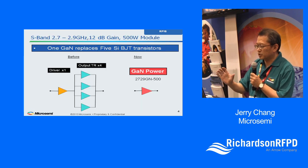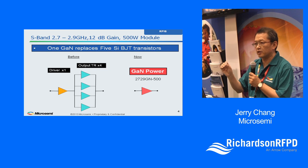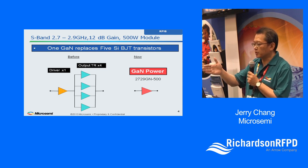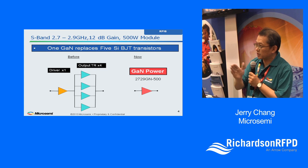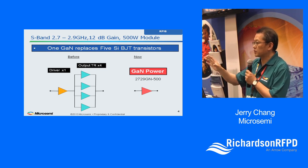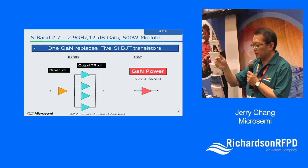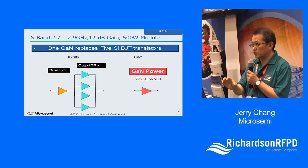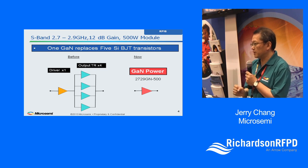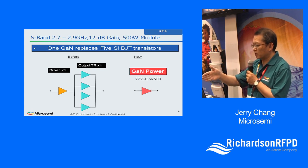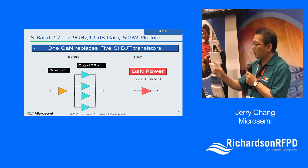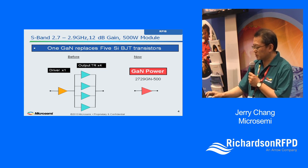Traditionally, to build an S-band 2.7–2.9 GHz air traffic control radar meeting 12 dB of gain with 500 watts of output, you had to use bipolar transistors — each rated only about 170 watts, so you'd combine four of them with a driver stage to achieve 500 watts total. Now, with GaN, MicroSemi's single device — model Power 27-29, meaning 2.7–2.9 GHz GaN 500 watts — can replace all five transistors in this application.